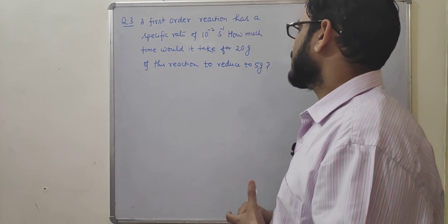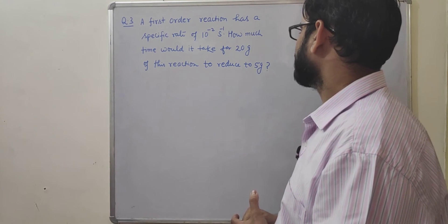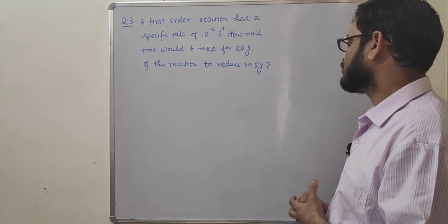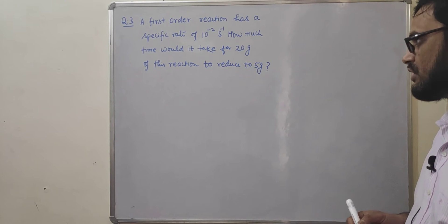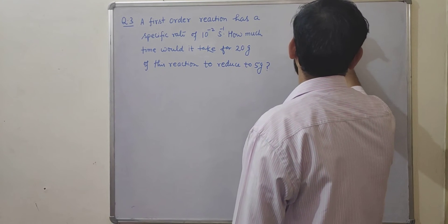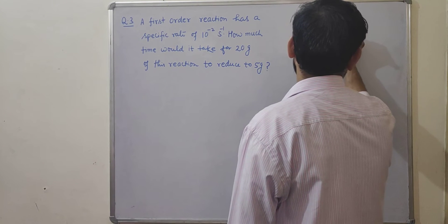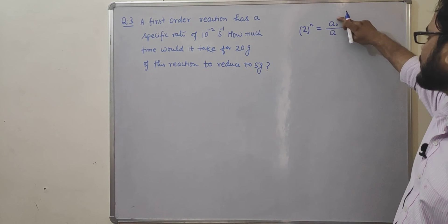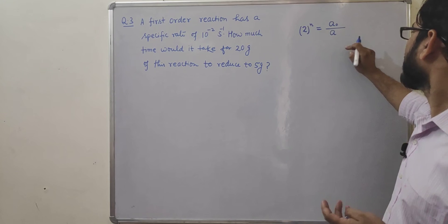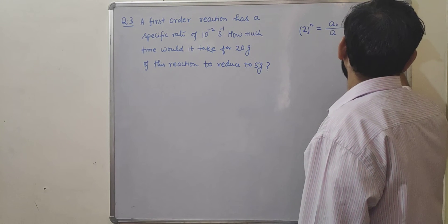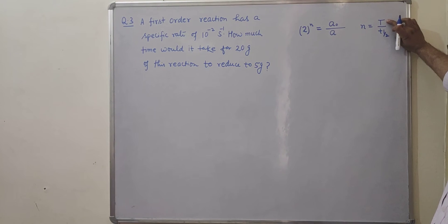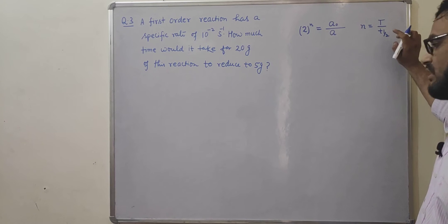Question number three: a first order reaction has a specific rate of 10⁻² s⁻¹. How much time would it take for 20 grams of the reactant to reduce to 5 grams? To solve this type of question, we use the formula 2ⁿ = A₀ / A, where A₀ is the initial amount, A is the amount at time T, and n = T / T½, where T is the total time and T½ is the half-life.